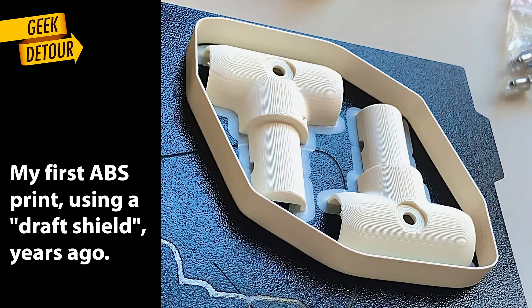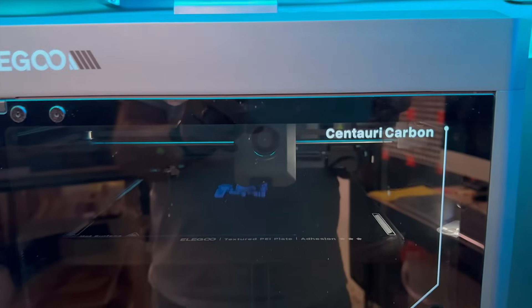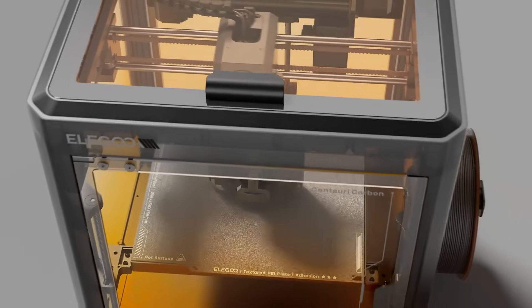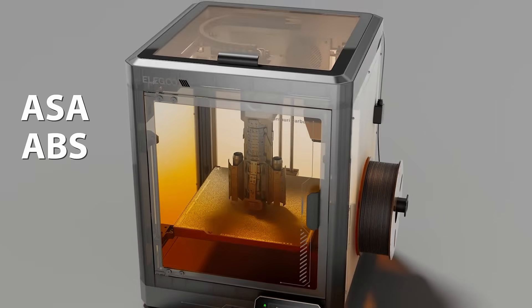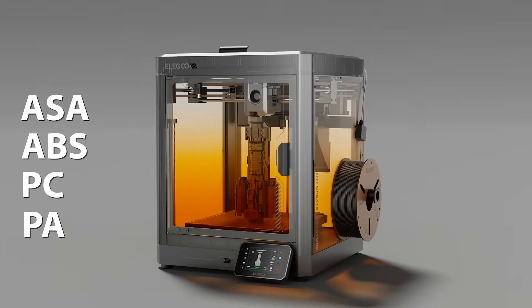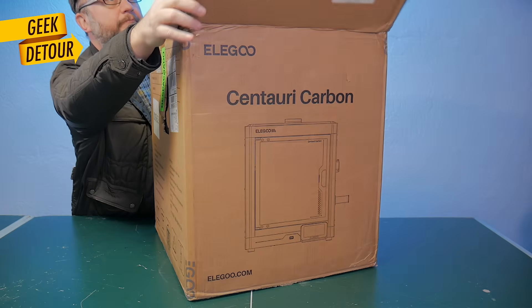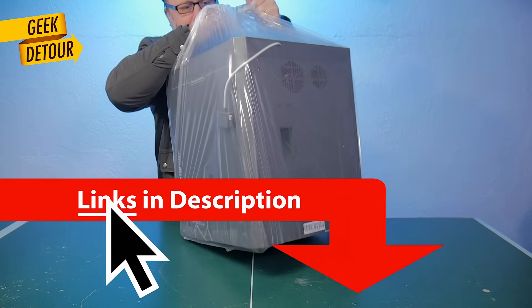ABS used to be a nightmare to print, but the Centauri Carbon is a closed printer capable of high temperatures. It's a great printer for many technical materials like ASA, ABS, PC and even nylon. And Elego made it so affordable.